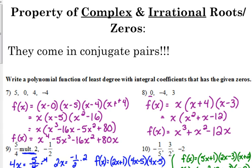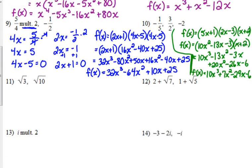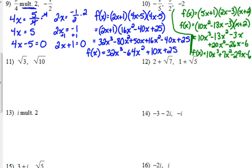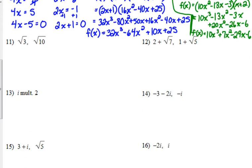Those come in conjugate pairs. What that means is you change the sign and it comes in a pair. So they only listed two zeros right here, but there are four. This is actually going to be a fourth degree polynomial once we work it all out.